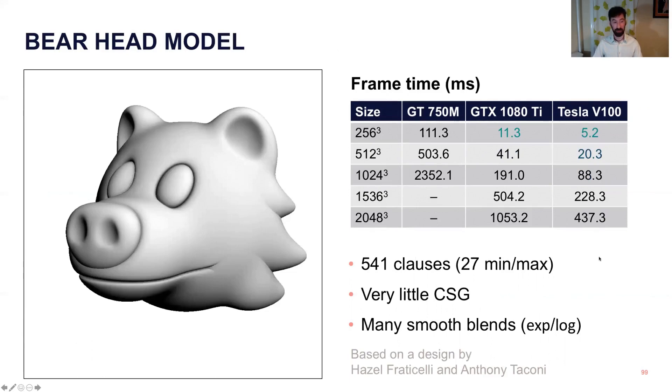Finally, we have kind of the adversarial case for a model, which is a bare sculpt based on the design by Hazel Fraticelli and Anthony Tacconi, and this is bad for the algorithm because it's very little CSG, and it's a lot of smooth blends, so you're hit on two fronts. These exponent and log operations might not have intervals that track as well, so that's one limitation, and also you have very little CSG, so you can't shorten the tape as effectively. So this beats 30 frames per second at 512 cubed, but then starts scaling down to 10 frames per second, 5 frames per second, and so on. This is not suitable for real-time use even on the big GPU.